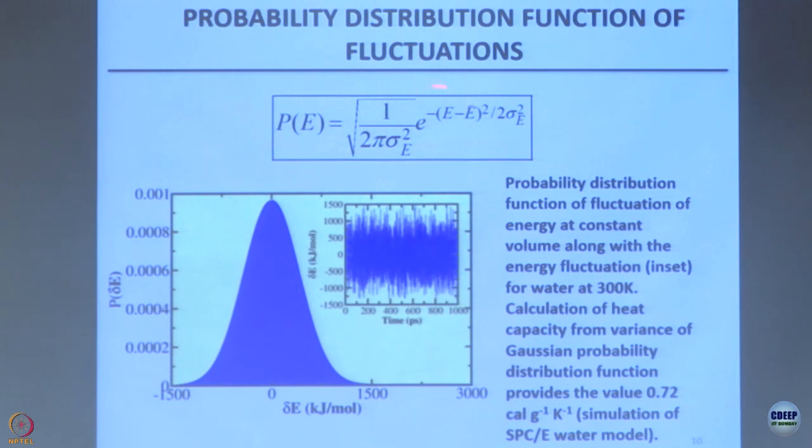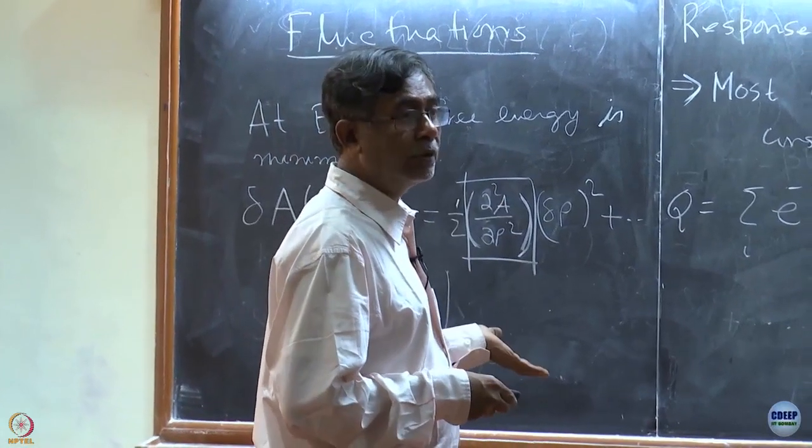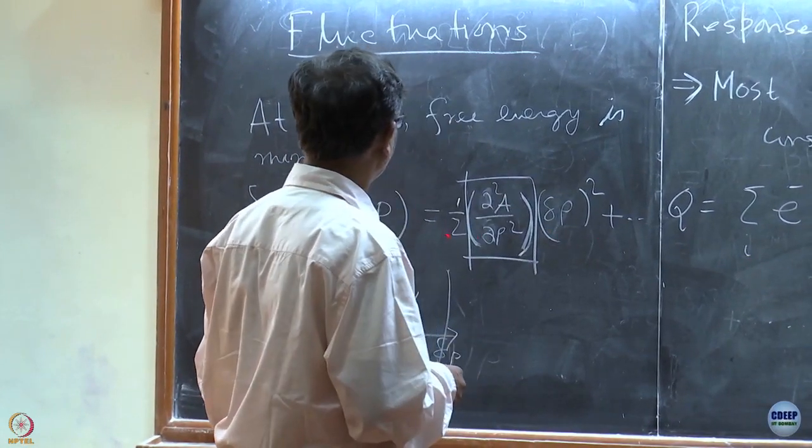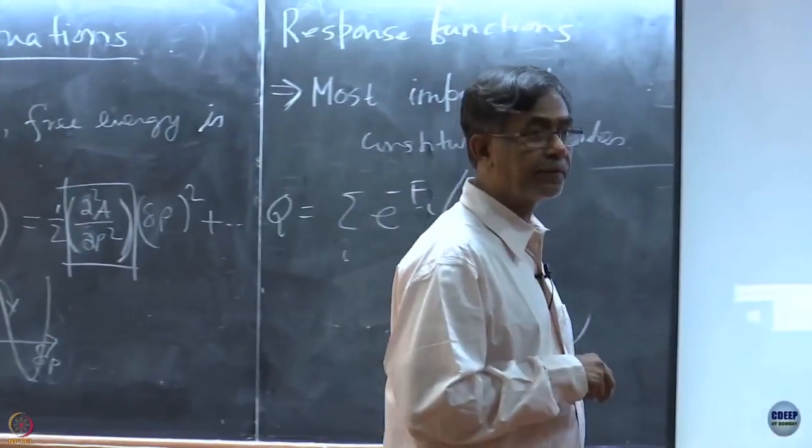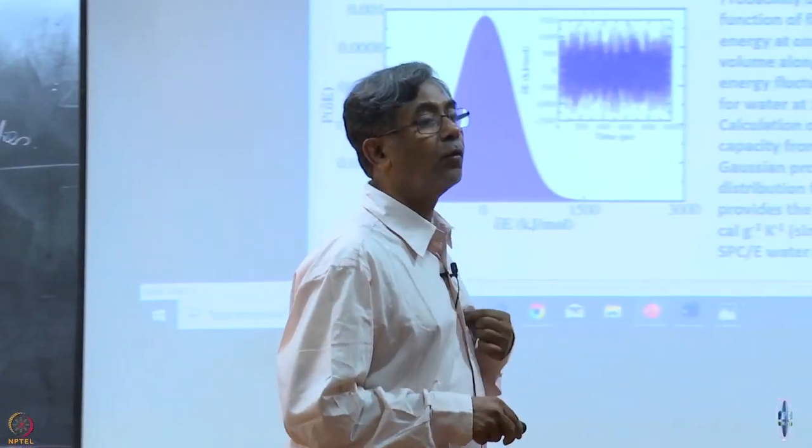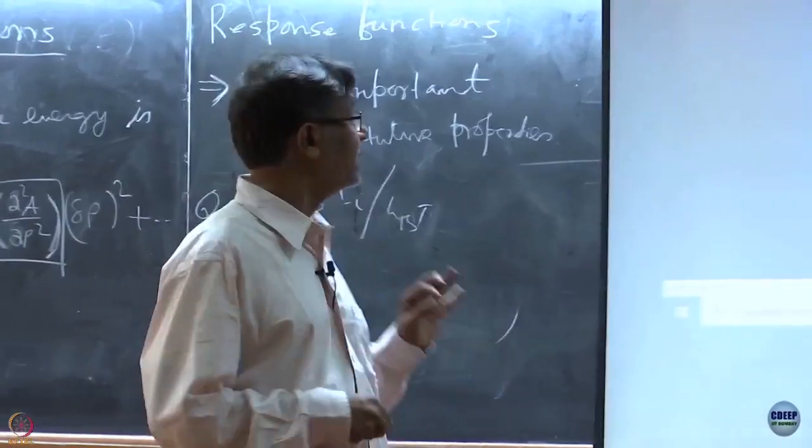But before I go into that, look at this functional form. Now remember, E average is the value at the minimum. And that is a macroscopic quantity, the average energy of the system. So the system must be minimum with respect to the average energy. First derivative will go to zero. So second derivative will be this quantity, which is the sigma square, which is the specific heat.